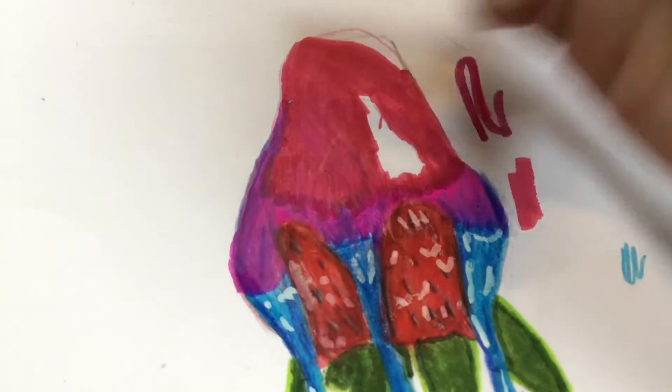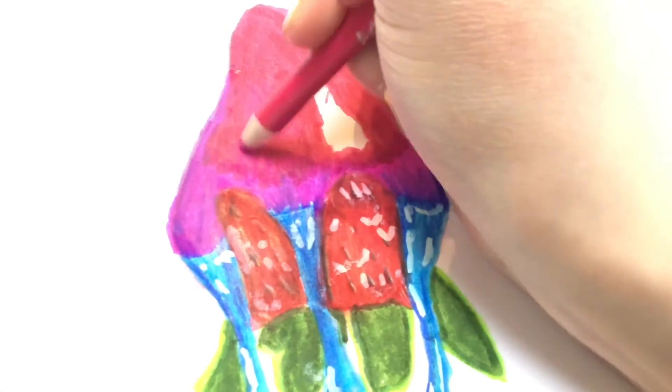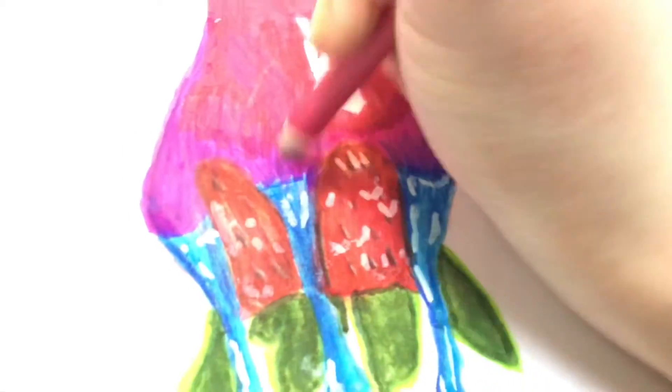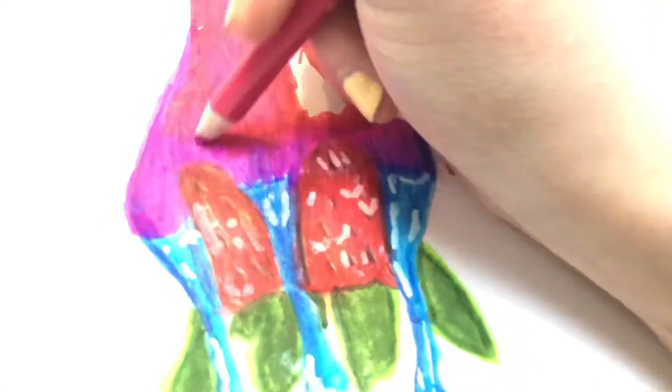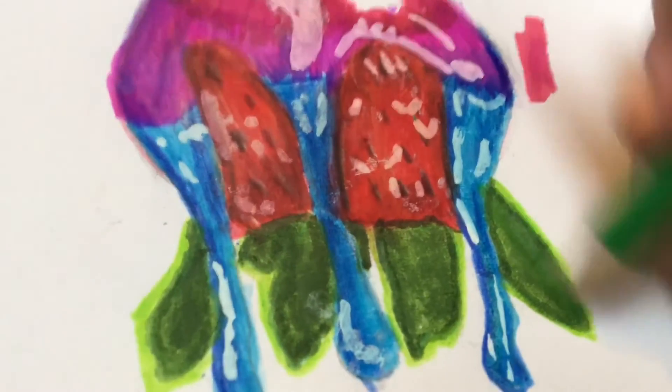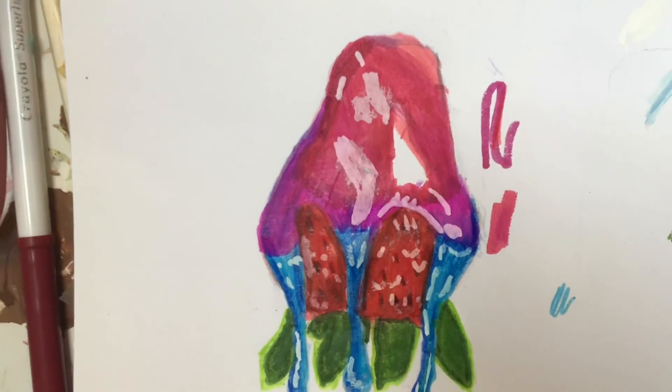And then I'm going to do the same with the two pinks. My pencil crayons don't go very well on my markers but that's okay. Now I'm just coloring the leaves a bit more. This is what it looks like. I think it turned out pretty good.